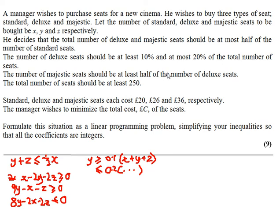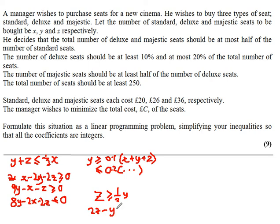The number of majestic seats should be at least half the number of deluxe seats. That gives us 2z minus y is greater than or equal to 0.